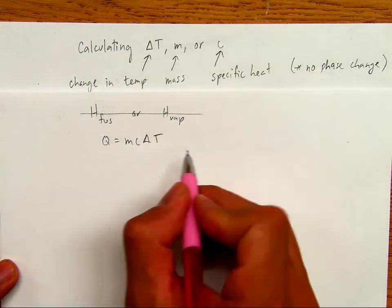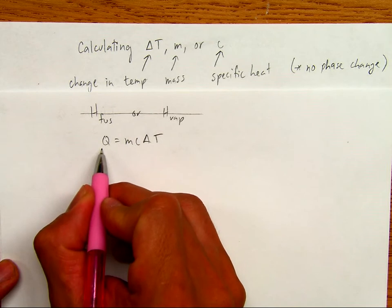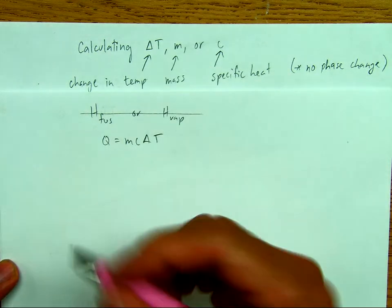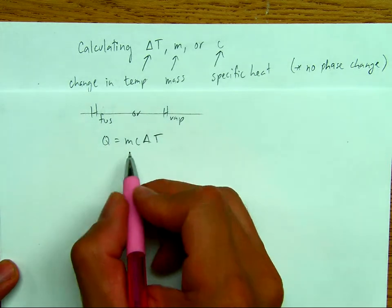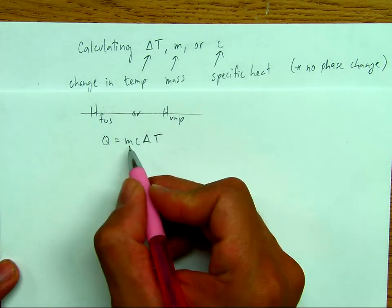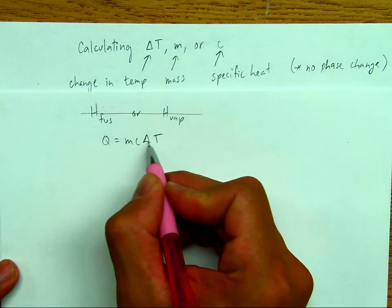Now, this is set up to find Q, which is energy. So that's simple. What I'm going to show you how to do is to isolate for mass, specific heat, or change in temperature.